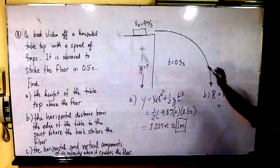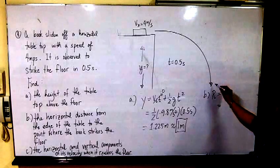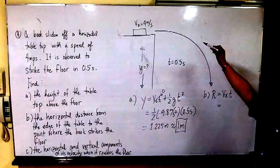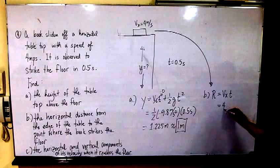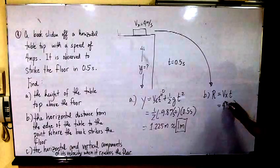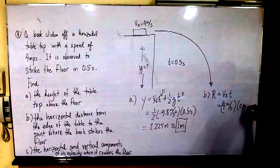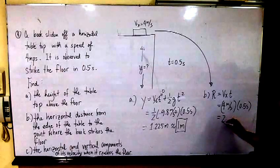In this case, the V sub X is constant all throughout. It is still the same, 4 meters per second. So 4 meters per second multiplied by the time of flight, 0.5 seconds, you will get 2 meters.